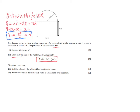The area of the window equals the area of the rectangle plus the area of the semicircle. The area of the rectangle is 2r × h (length times width), and the area of the semicircle is πr²/2 (divided by 2 because it's a semicircle). So A = 2rh + πr²/2.